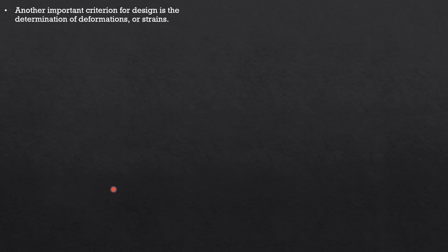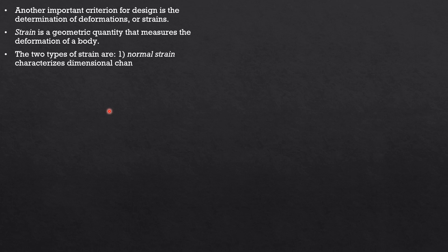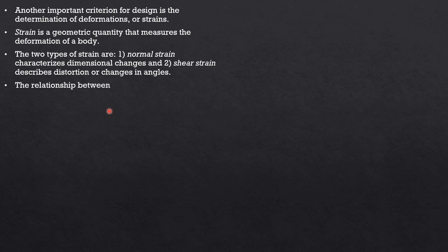An important criterion for design is the determination of deformations or strains. These values must be controlled within certain limits in order not to over-stress the material for safety purposes. Strain is a geometric quantity that measures the deformation of a body. The two types of strain are: normal strain, which characterizes dimensional changes, and shear strain, which describes distortion or changes in angles — these are the effects of loads or forces on deformable bodies.